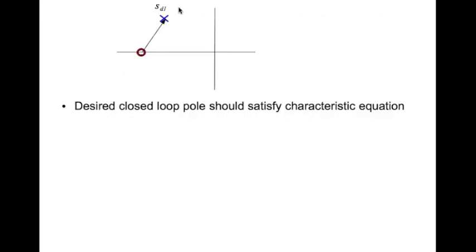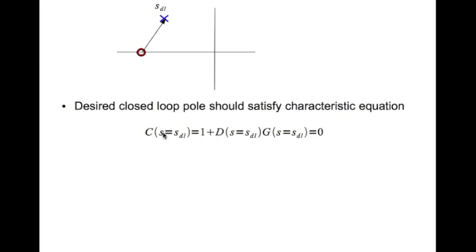With the PD controller, we place the controller zero such that the combined transfer function satisfies the characteristic equation. The characteristic equation is 1 + D(s)*G(s) = 0. Evaluating at s = s_d1, D(s)*G(s) must equal minus 1, meaning s_d1 must be on the root locus of the compensated system.